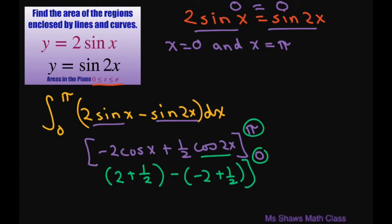And this is going to give you 4. These two are going to cancel out because of this negative. So 4 equals your area of the region.